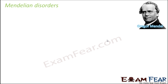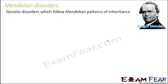You often come across the term Mendelian disorders. So what exactly is a Mendelian disorder? In honor of Gregor Mendel, these disorders have been named Mendelian disorders because these are genetic disorders which follow Mendelian patterns of inheritance. In Mendelian pattern of inheritance, a child receiving a dominant allele from either parent will have the dominant form of the phenotypic trait. Only those who receive the recessive allele from both parents will have the recessive phenotype.